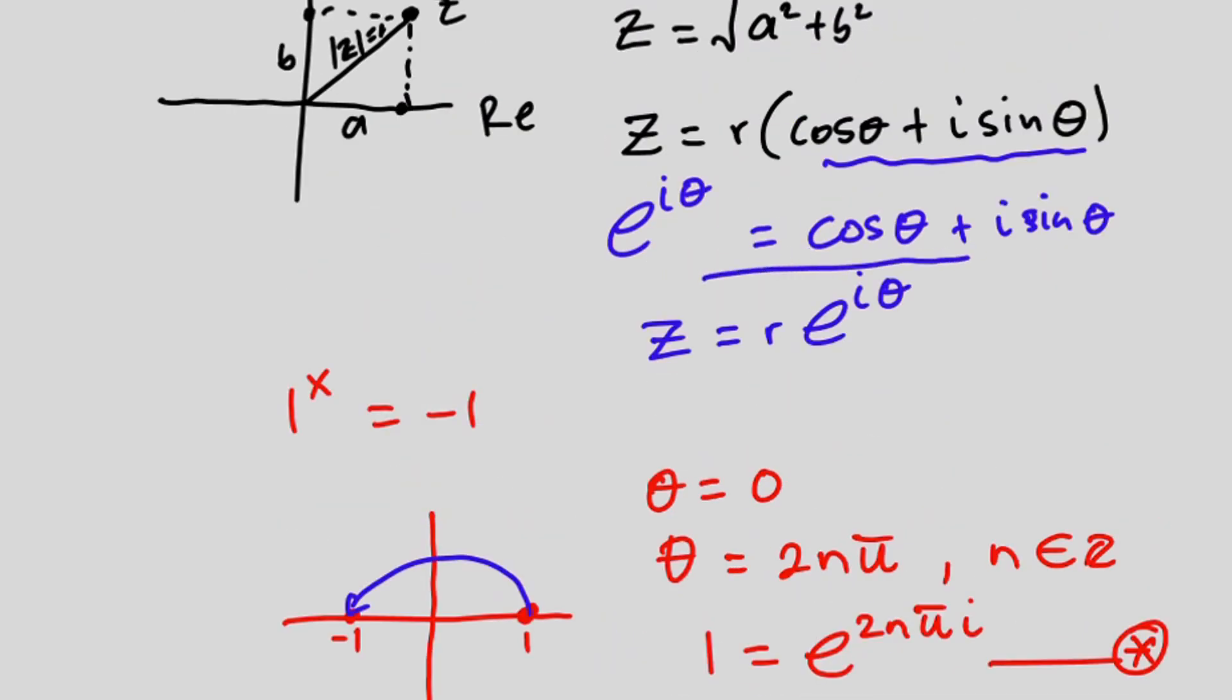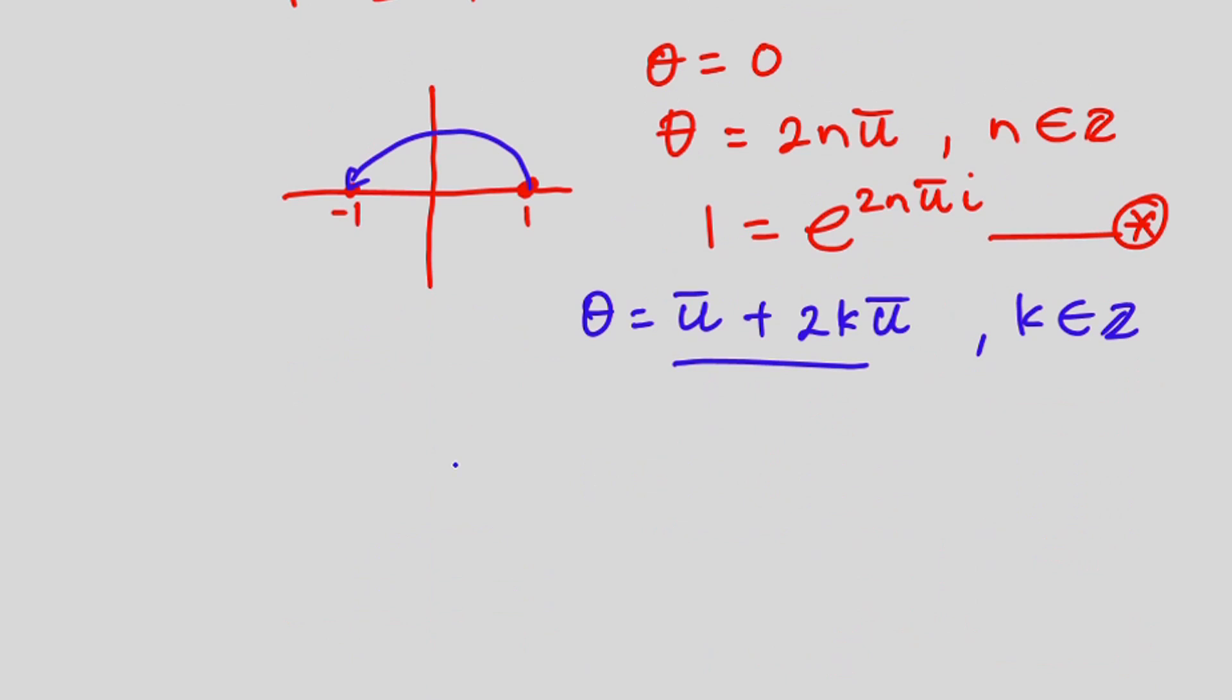Now note that k is also an integer. So in this case if we put this into Euler's equation then we're going to be getting negative one to be equal to e to the power i times pi plus 2k pi and let's call this equation hash.